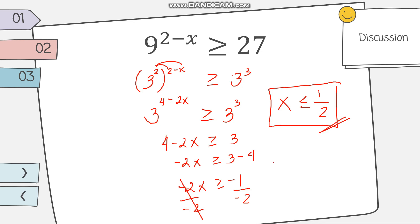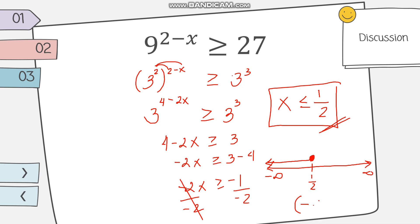To write the solution in interval notation, we draw a number line and locate 1/2. We use a shaded circle because the symbol is less than or equal to, meaning 1/2 is included. Since x should be less than or equal to 1/2, the numbers on the left side go to negative infinity. So the solution is from negative infinity to 1/2 included: written as (−∞, 1/2].